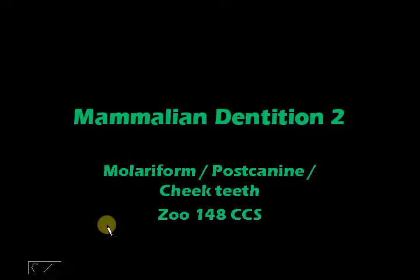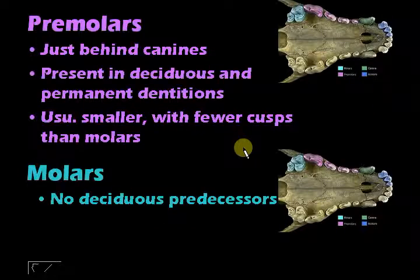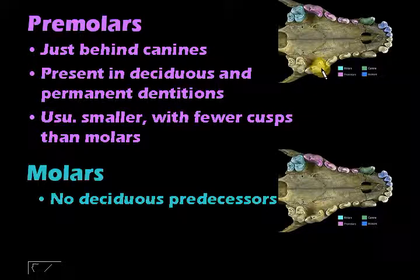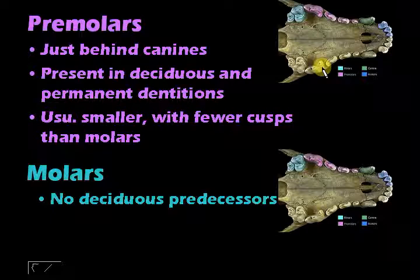This is part two of dentition, and we will be discussing premolars and molars, collectively called the molariform, post-canine, or cheek teeth. Premolars are found just behind the canines. What differentiates them from molars is that premolars are present in both deciduous and permanent dentitions, whereas molars are found only in the permanent dentition. Compared to molars, premolars are usually smaller and have fewer cusps.